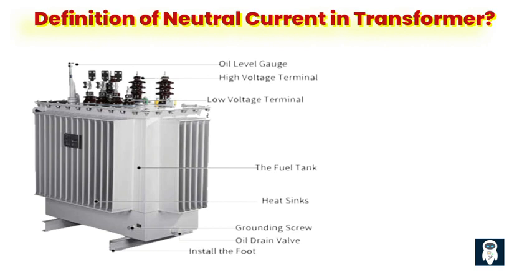Neutral current transformers are also used in protective relaying systems to trip circuit breakers in the event of a system imbalance. In addition, they are used in power quality analysis to measure harmonic currents in the neutral conductor. Harmonic currents can cause power quality issues such as voltage distortion and overheating of equipment, and by monitoring them with a neutral current transformer, these issues can be identified and addressed.